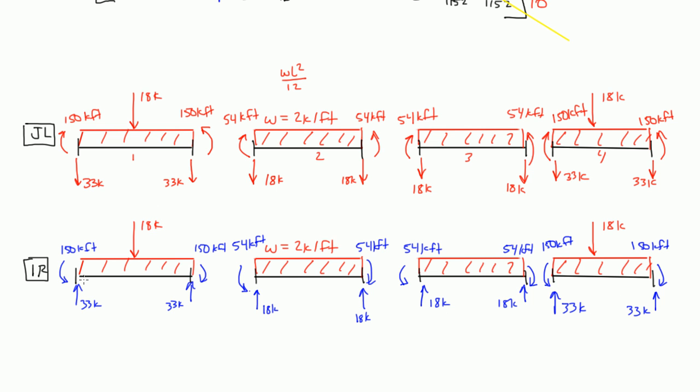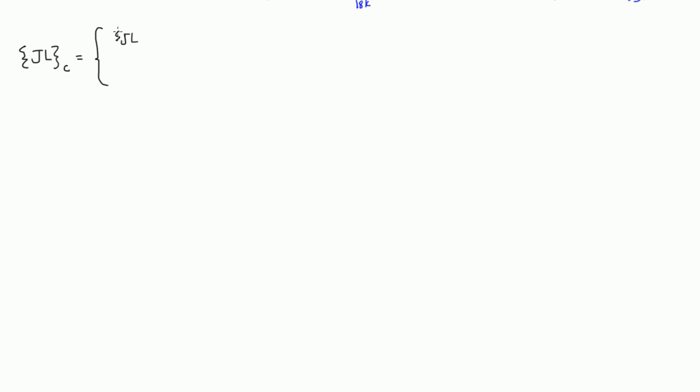So we came up with the joint load diagram and the internal reaction diagram. The next step is to figure out what your JL complete vector is — your column vector. Your JL complete is your joint load column vector unrestrained over your joint load vector restrained. How do we figure out the values in this joint load unrestrained column vector?